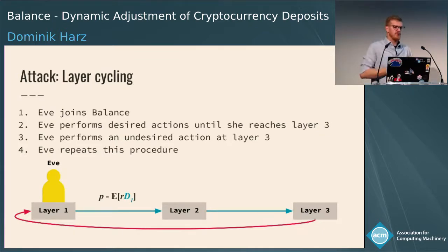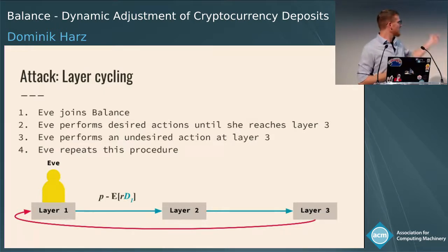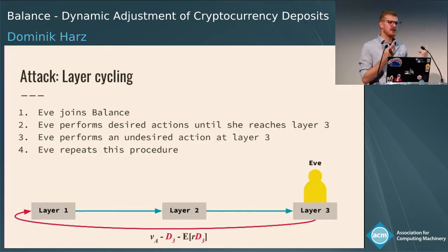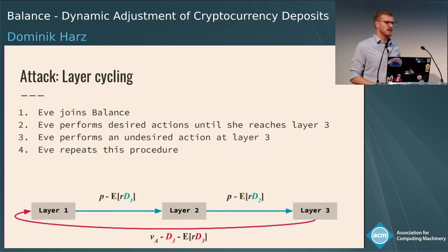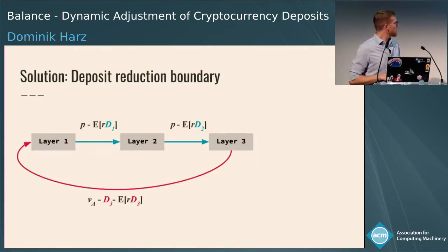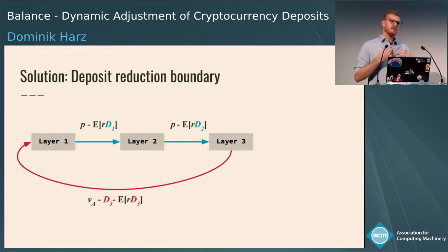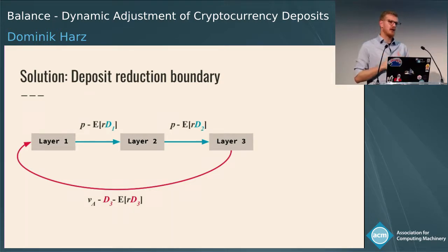Now we attack our own protocol. A potential strategy: Eve joins the protocol, moves through the layers to the lowest collateral layer, cheats at that point, and then repeats this over and over again — a layer-cycling strategy. How do we prevent this? The solution is to bind how much collateral can actually be reduced. We cannot reduce collateral to zero; we must reduce it only to a lower bound, which we can calculate.